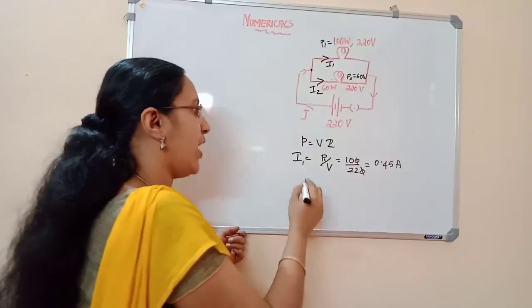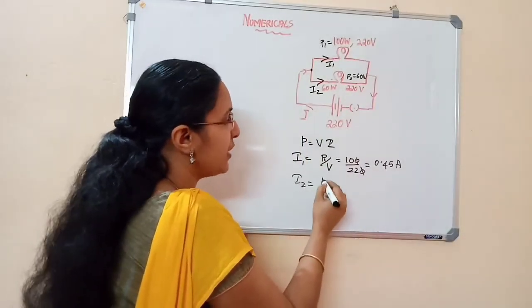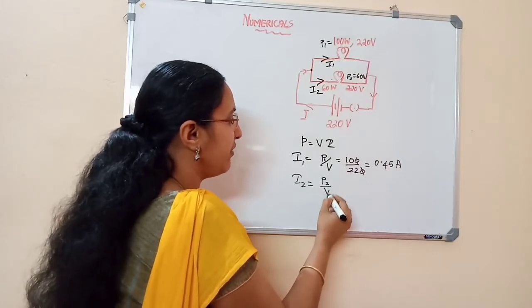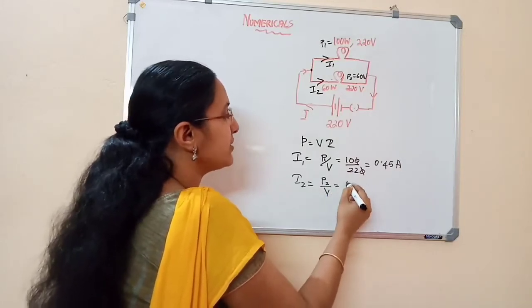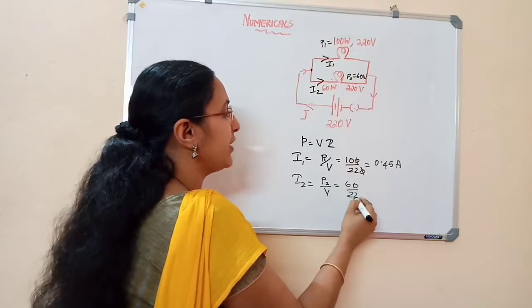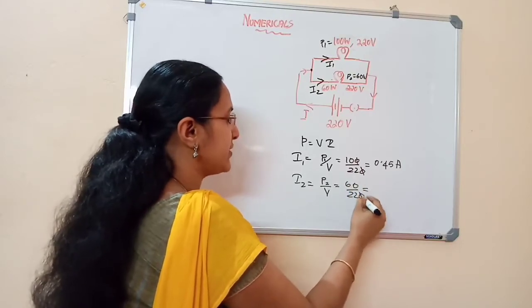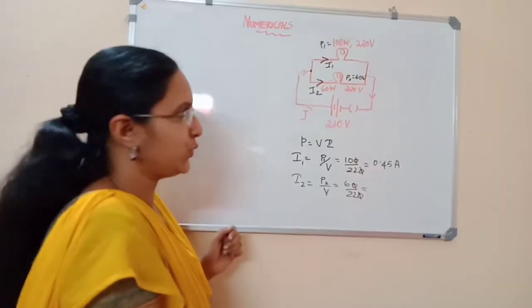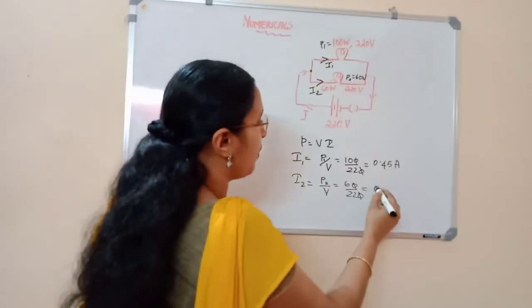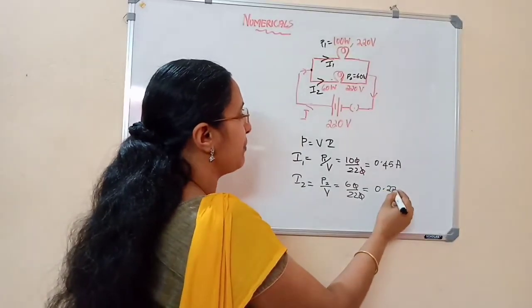Next, you want to find out i2. i2 is also found the same way: P2 divided by V, that is 60 divided by 220 volt. 6 divided by 22 gives you 0.27 ampere.